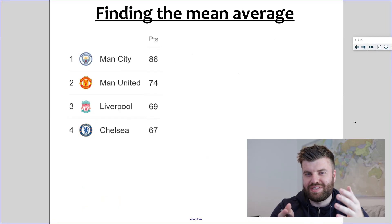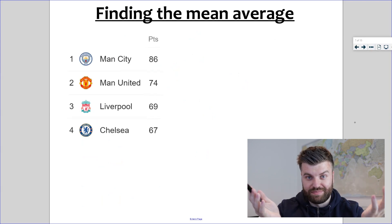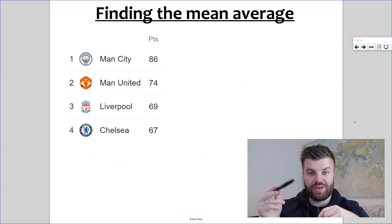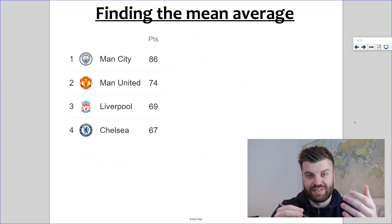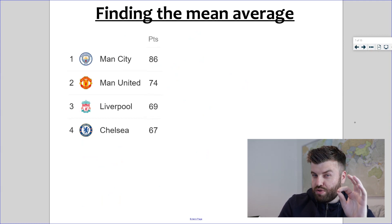Now once you've got that formula sorted, it works for any set of numbers. It doesn't matter how big or how small they are. On the board I've got last season's Premier League table and I've got the top four teams. Now you might be asked to work out the average number of points these four teams scored when put together. Well, you know the formula now. Why don't you try and race me at home? See if you can get the answer quicker than I can.